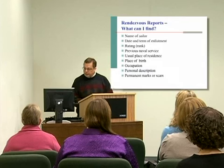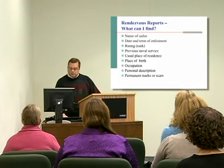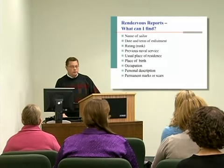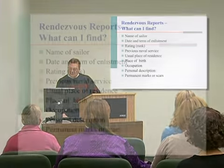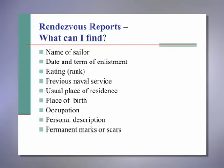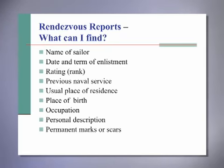Basic information you can find on the rendezvous report for a typical sailor includes his name, his date and term of enlistment, his rating which was the naval equivalent of his rank, his previous naval service if any, his usual place of residence — where he resided when on land and not at sea — his place of birth, his civilian occupation, a personal description, and information about distinguishing marks and scars to help further identify who he was.